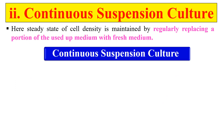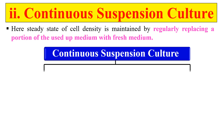Next is continuous suspension culture. In this type, we replace the used media with fresh medium continuously. The culture is continuously maintained with fresh medium, replacing used media at regular intervals.